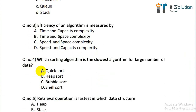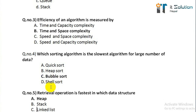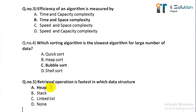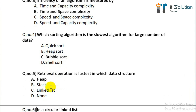Question number four: which sorting algorithm is the slowest algorithm for a large number of data? Its correct answer is bubble sort. Question number five: retrieval operation is fastest in which data structure? Its correct answer is heap.